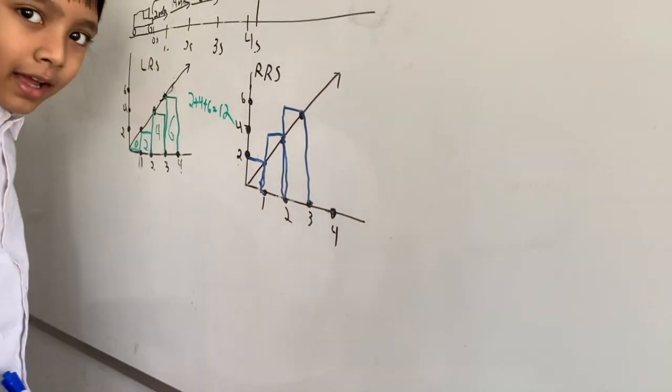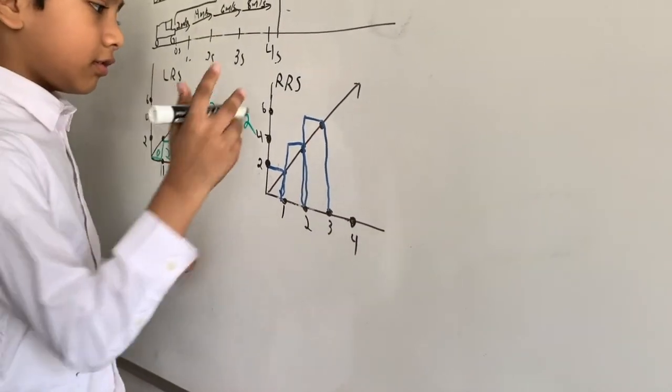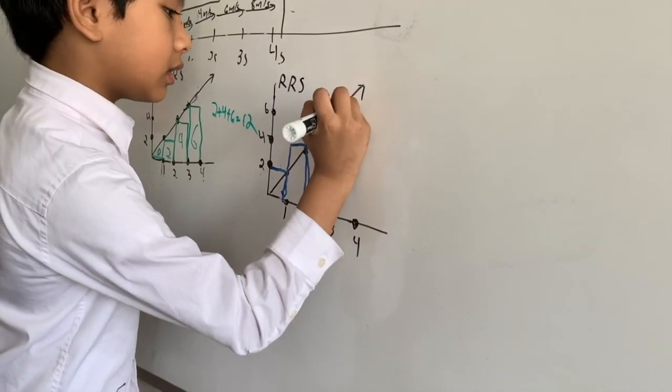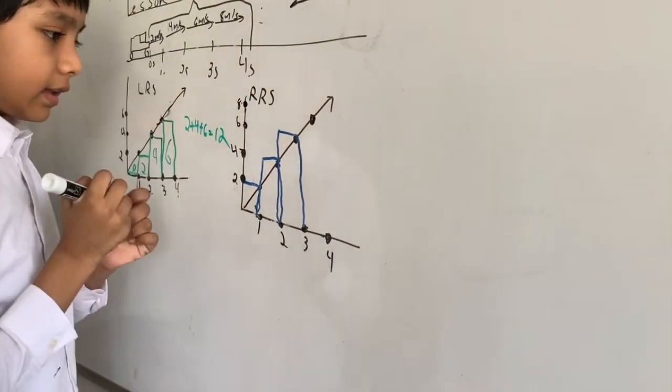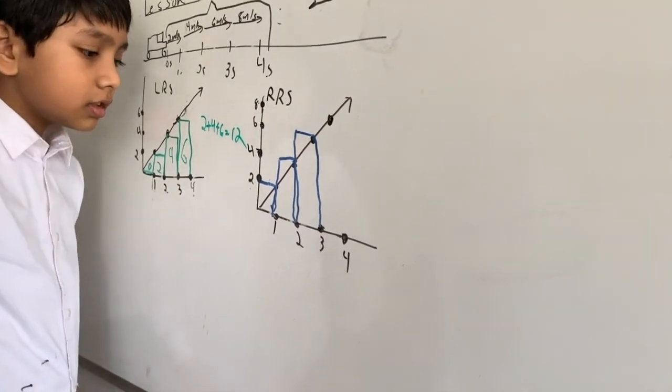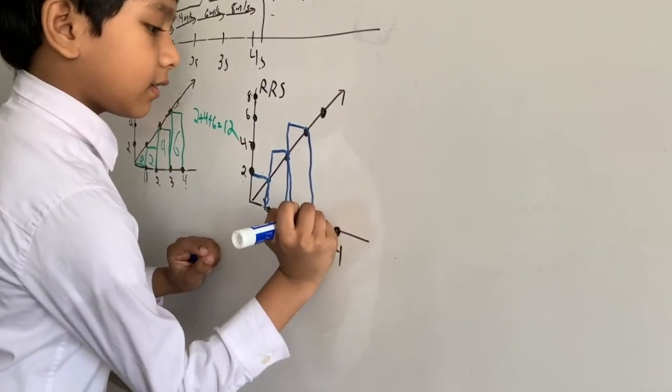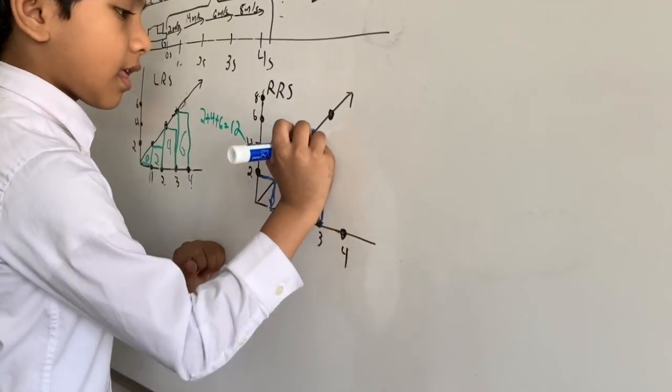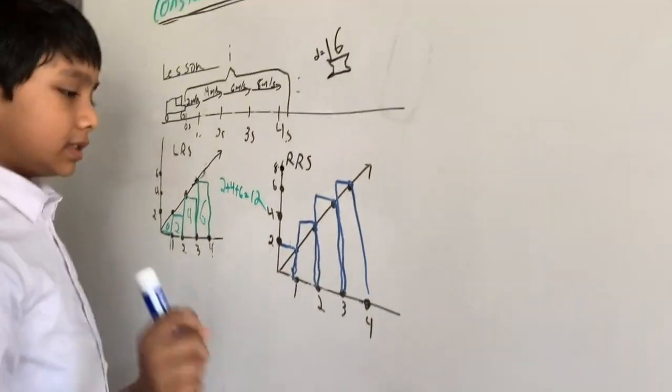Forgot to add one extra point. All right. Eight. Yeah, that's good. These triangle bits mean overestimation.